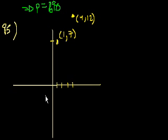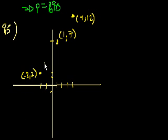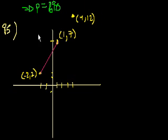Statement number 2 says the point minus 2 comma 2. So minus 2 comma 2 — x is minus 2, y is positive 2 — lies on the line. Just statement number 2 by itself doesn't help us either, because this line could go anywhere. You need two points to know what the line is. The easiest way to figure out if the point 4 comma 12 is on this line is to figure out the slope of the line and then extend that slope to see if 4 comma 12 lies on it.